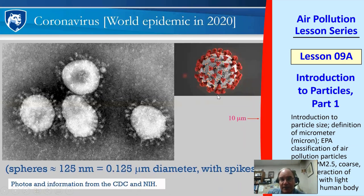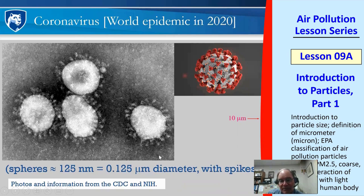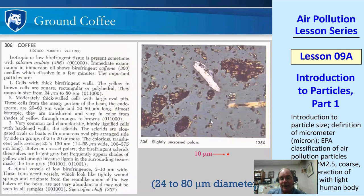Coronavirus, prominent in 2020, is about 125 nanometers or 0.125 microns, with little crown-like spikes — hence the name coronavirus. My 10-micron reference dot is so large it can't even be fully drawn here — 10 microns is huge compared to 0.125 microns. These are very small particles, actually large for viruses, but tiny compared to 10 microns. Ground coffee has some very small particles but they're typically much bigger than a micron, and no matter how long you grind, they'll never get smaller than about a micron.